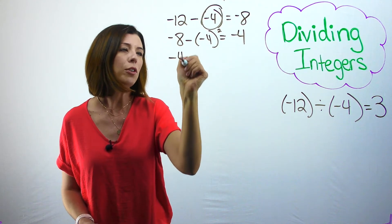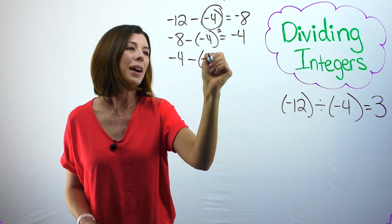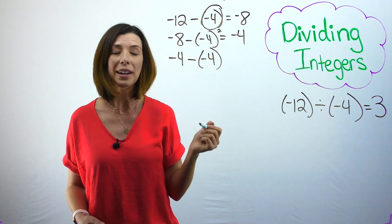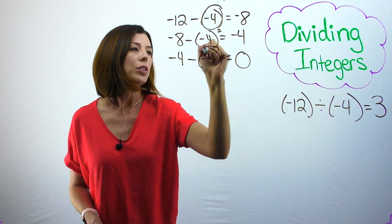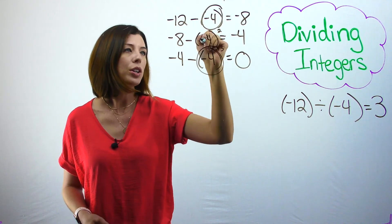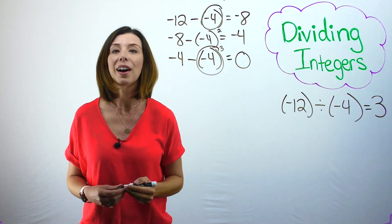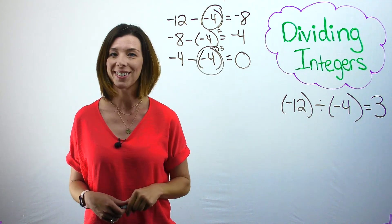Then I've got negative 4. I'm going to subtract out my last group of 4 negatives. And I am left with nothing left over. You can see that I have 1, 2, 3 groups of negatives. This is why I get a positive answer.